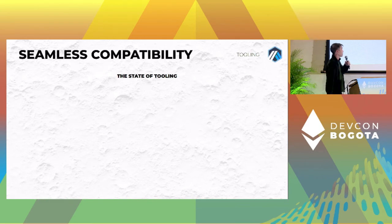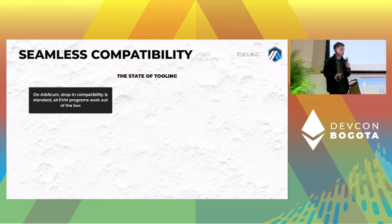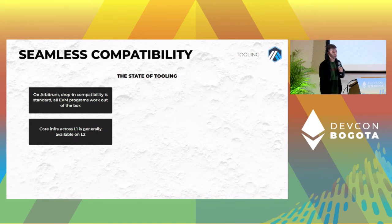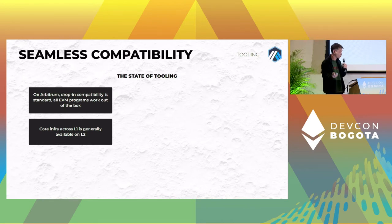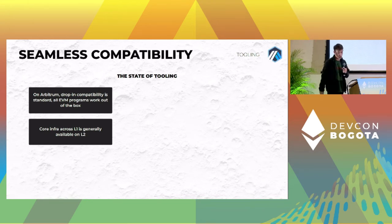The next thing I want to talk about is compatibility. We're in a good state right now — on Arbitrum and a lot of layer twos, drop-in compatibility is standard. EVM programs work out of the box. Moving to layer two as a developer is basically not a huge issue. Core infrastructure — RPC providers, price oracles, graphs, monitoring analytics — it's all there, already ready for you on L2. We've got a robust set of tooling and infrastructure if you want to deploy.